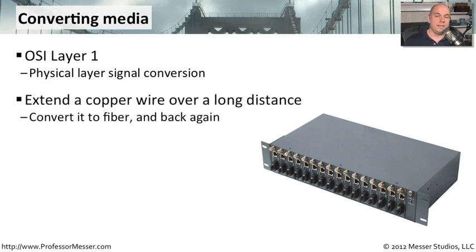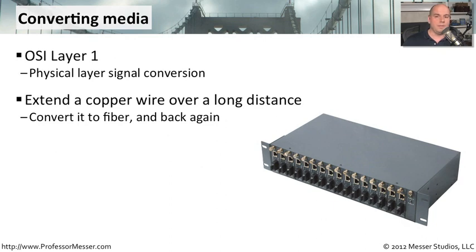A common use of this, for instance, might be taking a copper cable — which can only go a certain distance — and extending how far it can go by converting it to a fiber connection, which can go four kilometers. On the other end, you convert it back to copper, effectively using copper connections on both sides. Neither piece of equipment on either side knows there's fiber in between; they think the devices are sitting right next to each other.